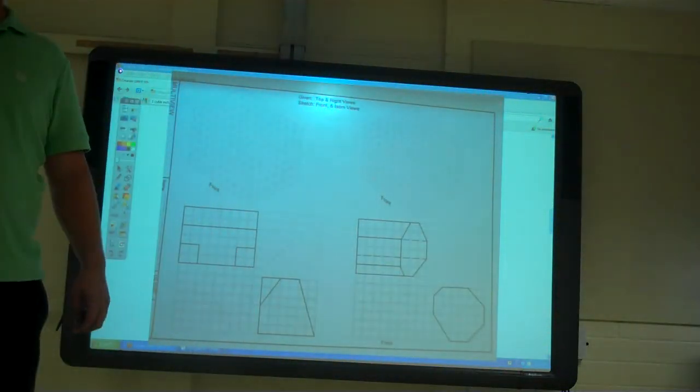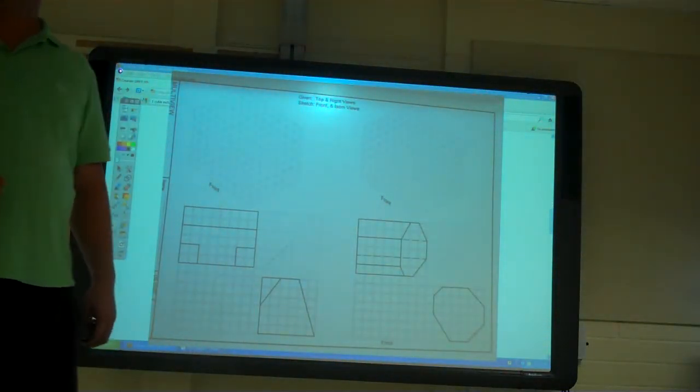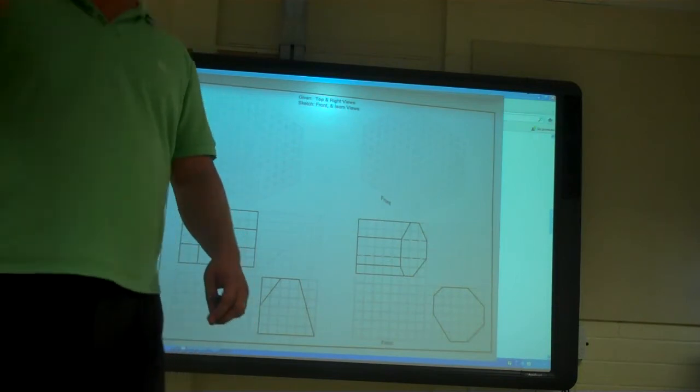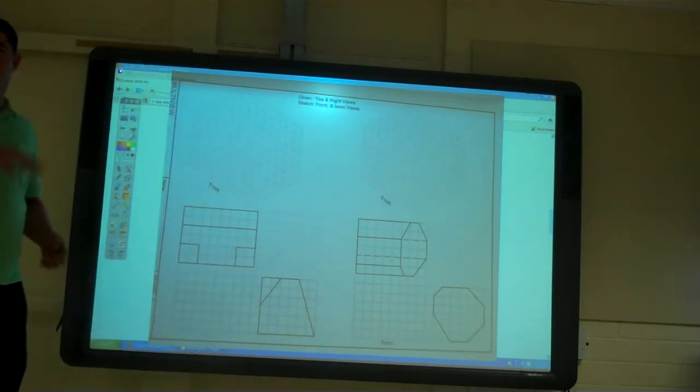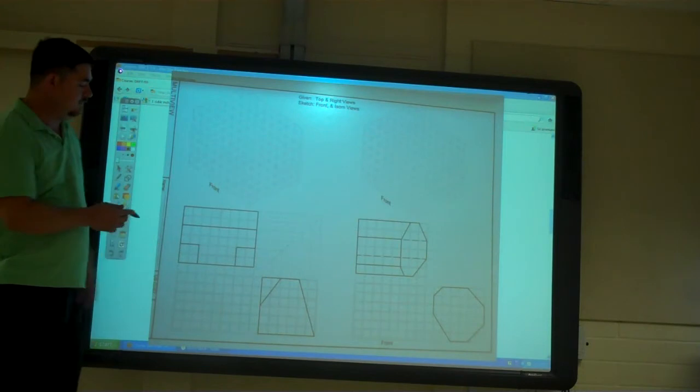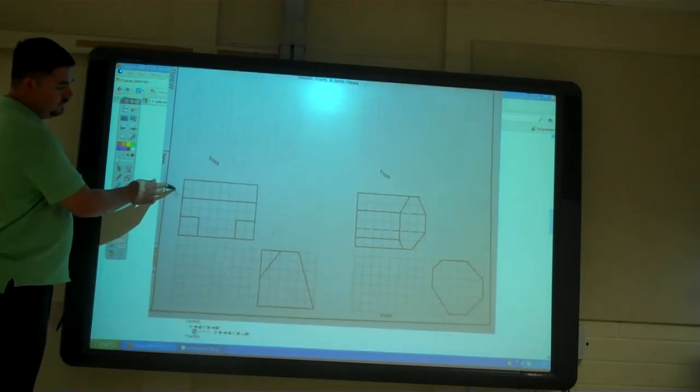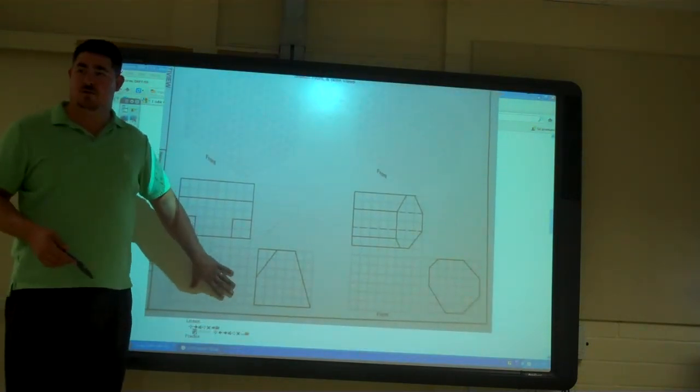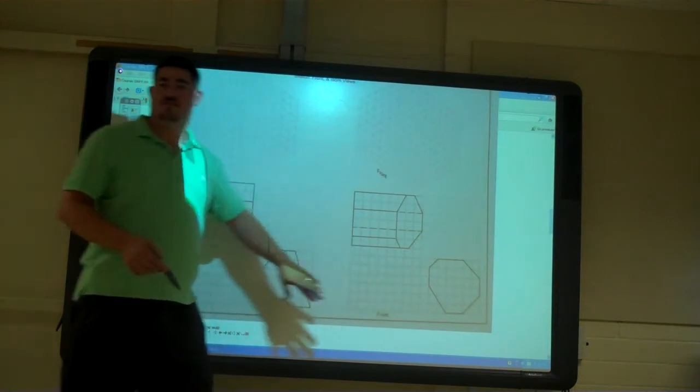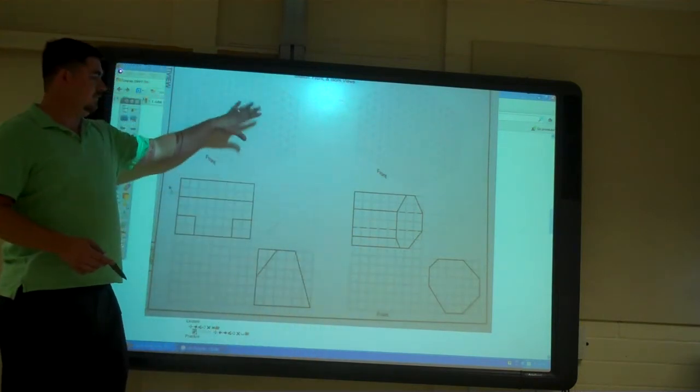It's been a long day. Let's do this first. So here's 1A. You can see it has a missing view. So you have to figure out what the front view is and then do the isometric.